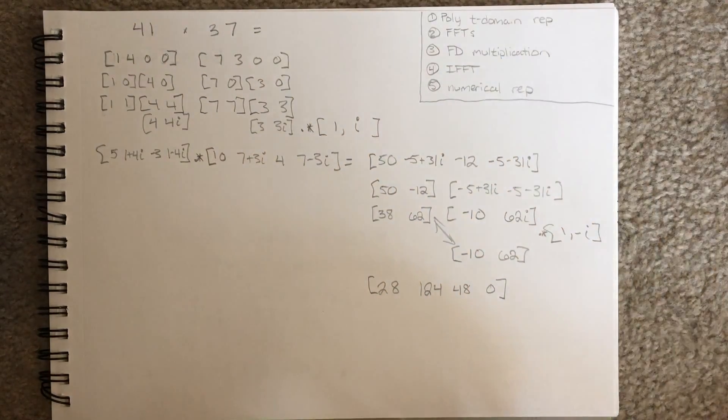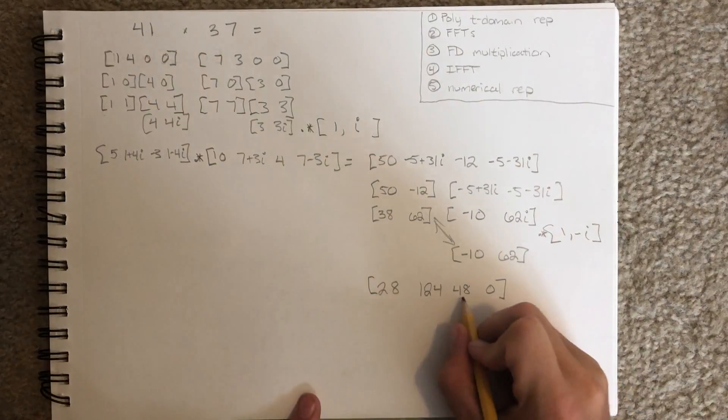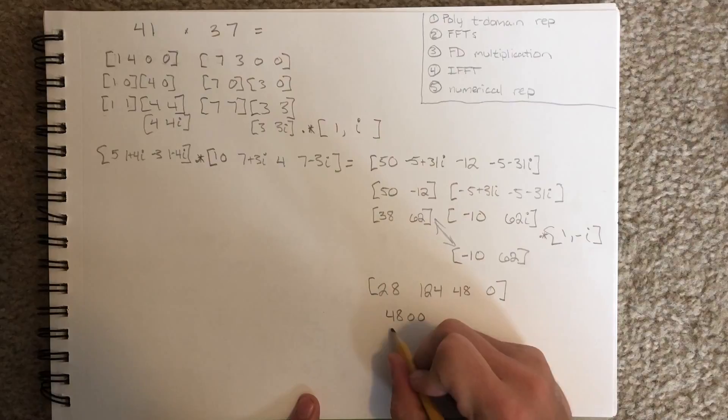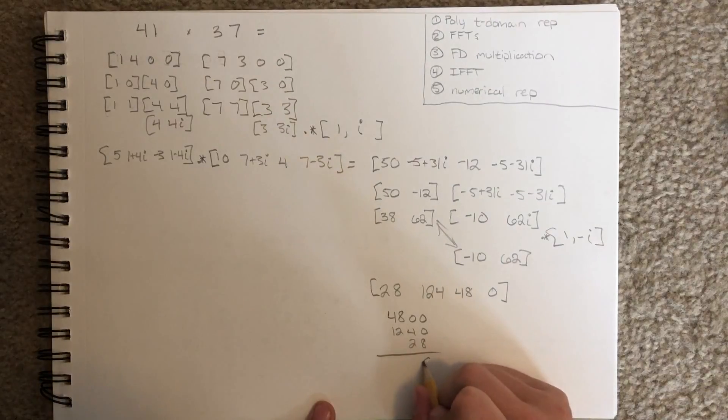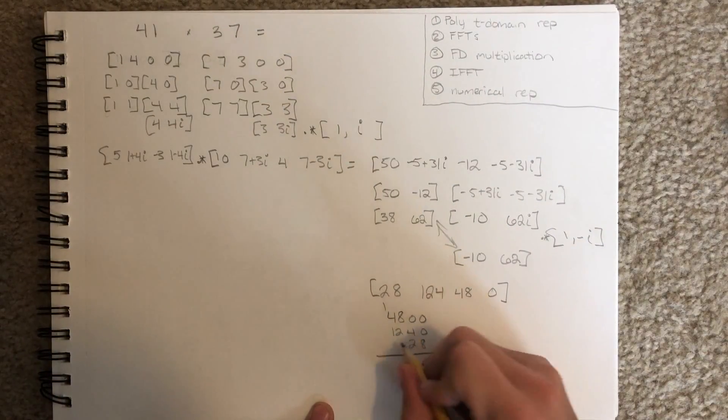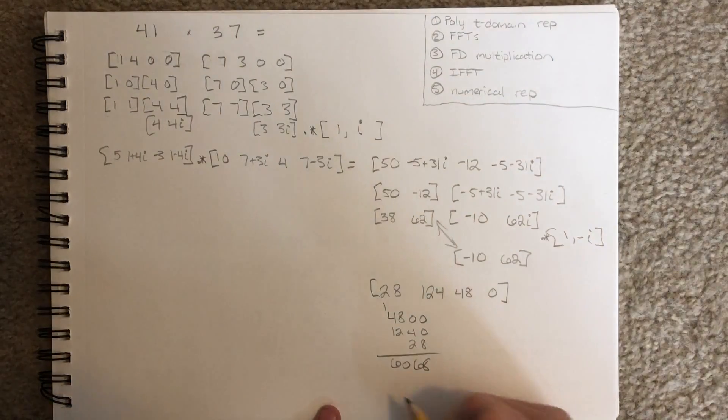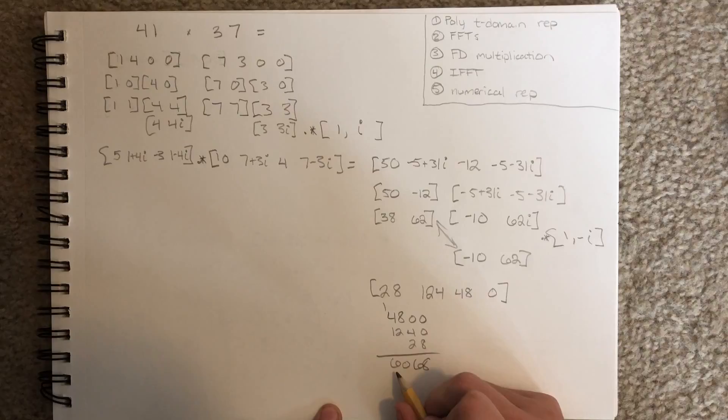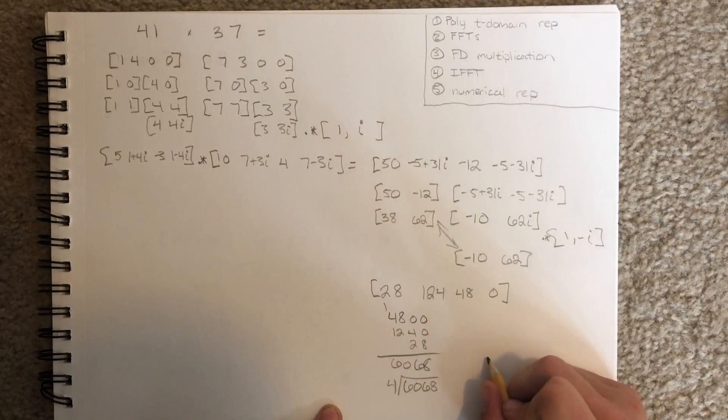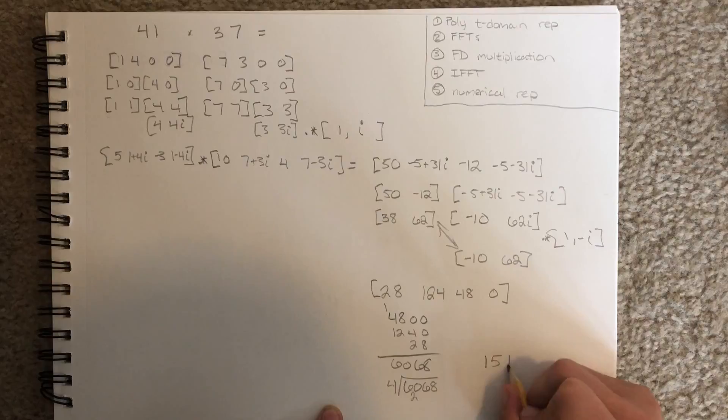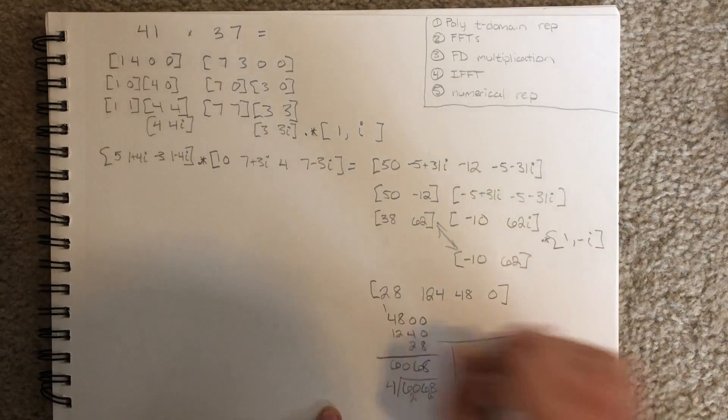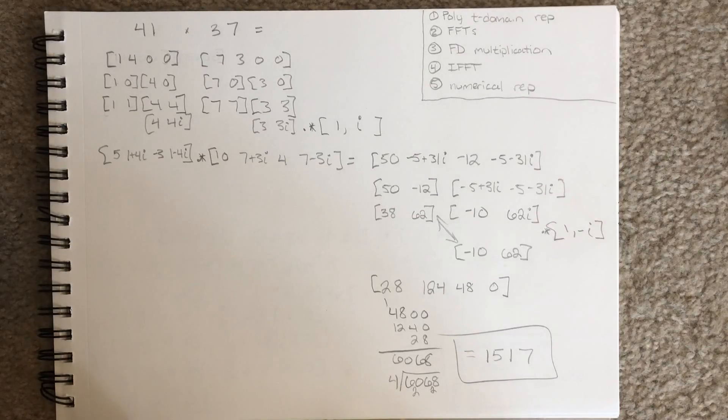Now, we just need to re-represent in its numerical representation. 48, 0, 0, 1, 2, 4, 0, 28. Add these. Divide by our sample size, which is 4. 41 times 37 equals 1517.